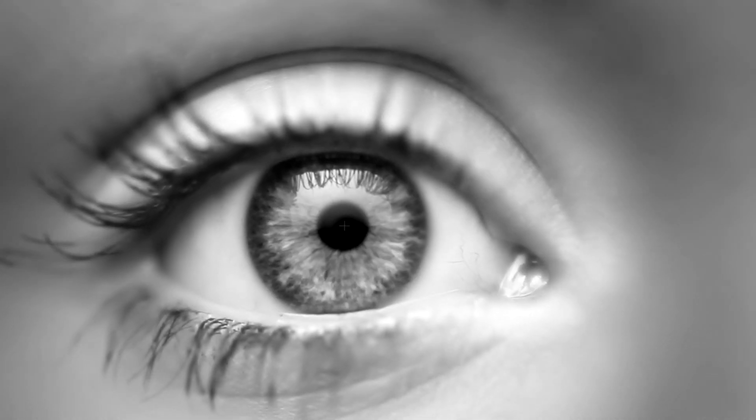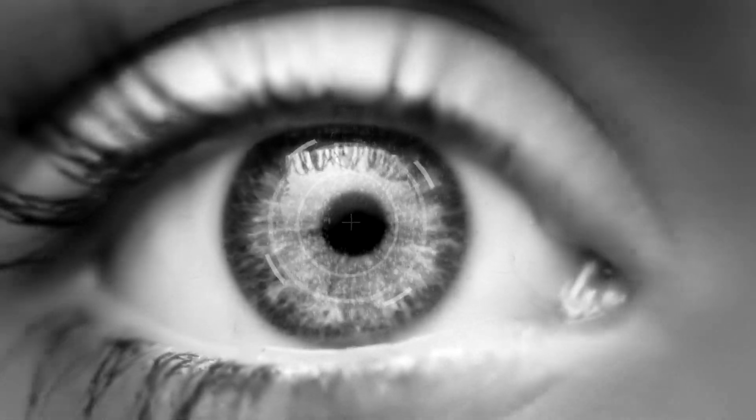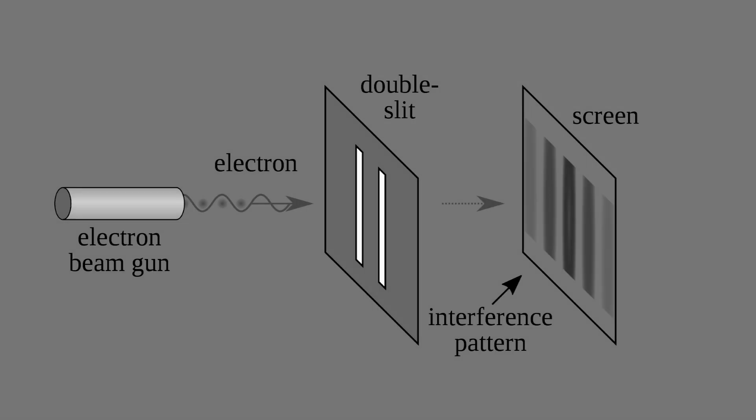While in classical physics an object is either a particle or a wave, in quantum mechanics it is more complicated than that. It all depends on the vantage point of the observer. Take for example a double-slit experiment. If we think of an electron as a particle and decide to observe which slit the electron goes through, we will indeed detect the slit that the electron went through, after which the electrons will be randomly distributed on the second screen.